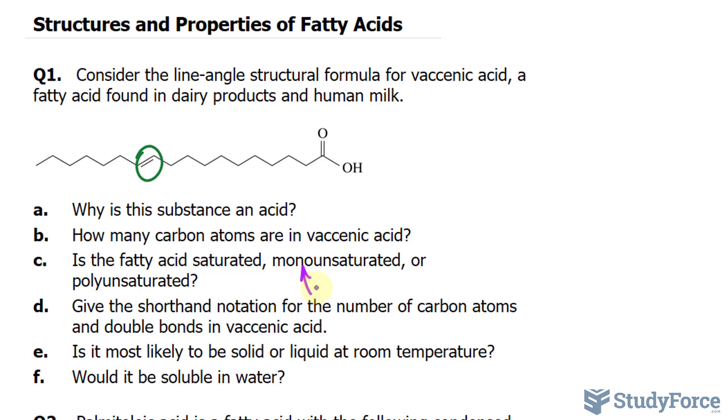In question D, give the shorthand notation for the number of carbon atoms and double bonds in vicinic acid. When it comes to writing the shorthand notation, we start by writing out the number of carbons. We have 18, and then followed by the number of double bonds. We have one double bond, so 18 to 1, and then the position of that double bond. For this, we start counting from the carboxyl group. So, we have 1, 2, 3, 4, 5, 6, 7, 8, 9, 10, 11. We can write down 11, like this, or you can even write down delta 11. And it's important to note that in some literature, the 11 is written as a superscript. So, it would be delta 11, and instead of this semicolon, we would have a comma.